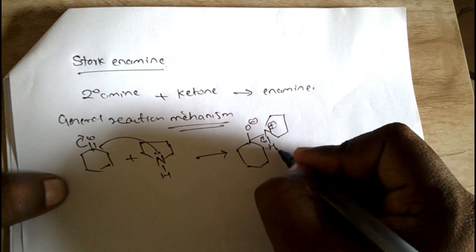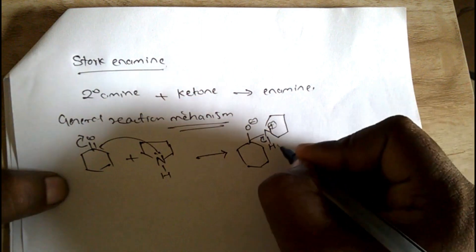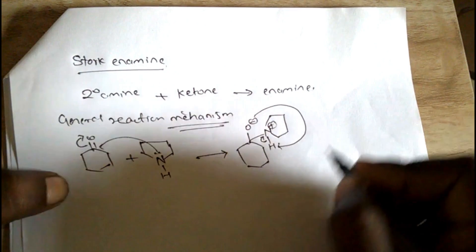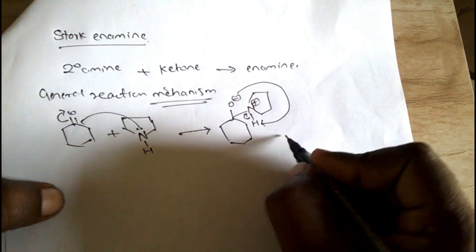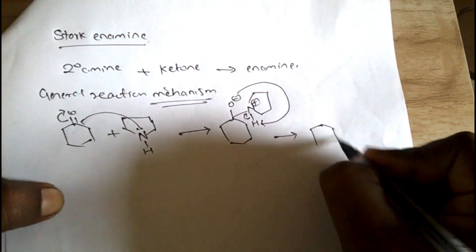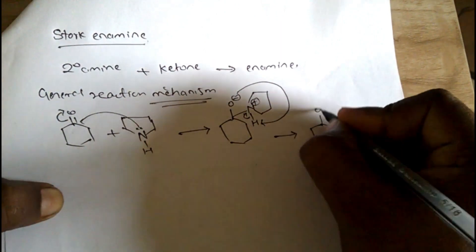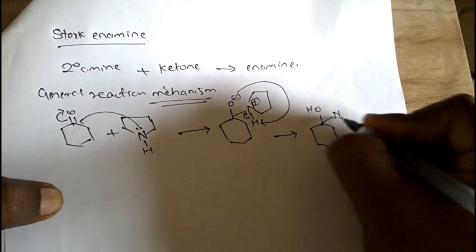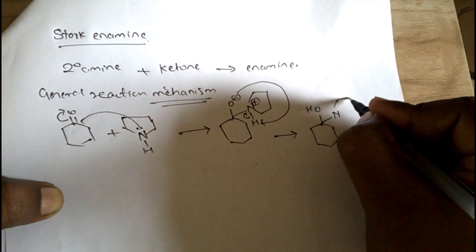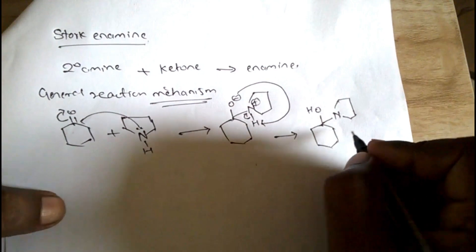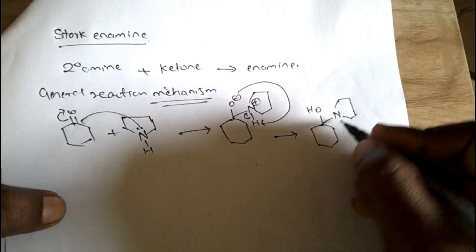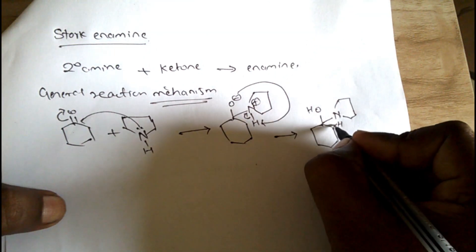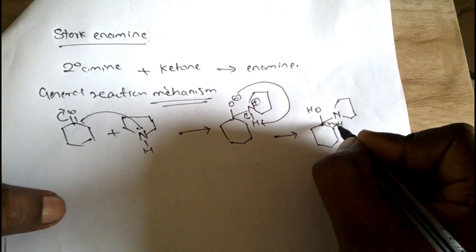To neutralize, the bond will shift towards nitrogen, and H will release as H+. The nitrogen lone pair will catch the H+, so we get an OH and nitrogen is now trivalent.